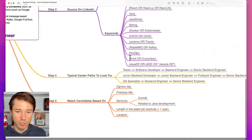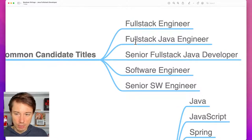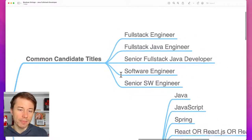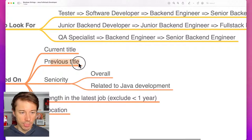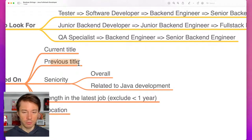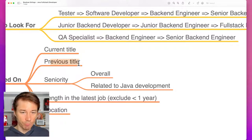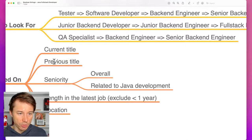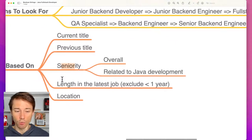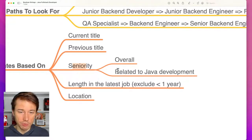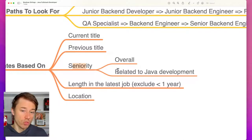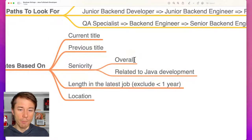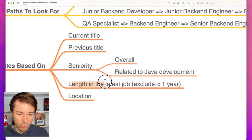Keep the job requirement in mind and evaluate every profile you see — think about whether the current title is a good fit. If the person has one of those titles we discussed — full stack engineer, full stack Java, senior full stack, senior software engineer — that could be a good fit. Also consider the previous title. If someone shifted from product owner or did marketing or sales, those people may not be strong enough technically. We need to consider the overall seniority — someone may have 10 years of experience but only used Java for a year, which would not be a good fit.